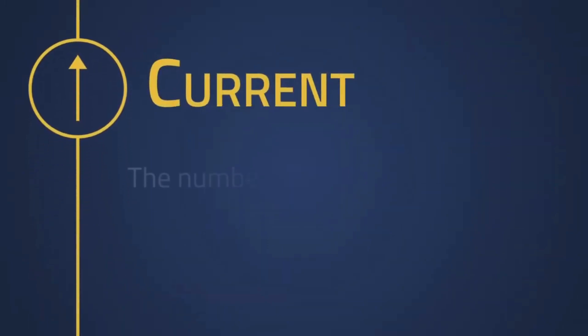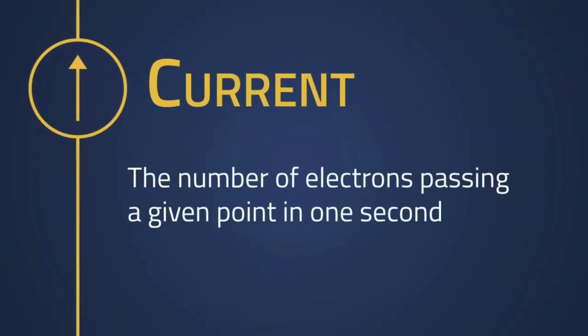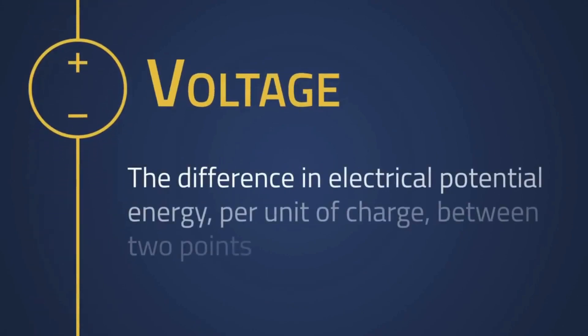An electrical current is defined as the number of electrons passing a given point in a second, and voltage is defined as the difference in electrical potential energy per unit of charge between two points.